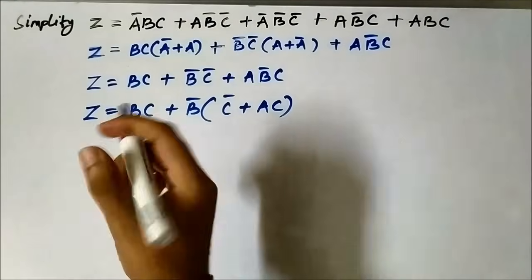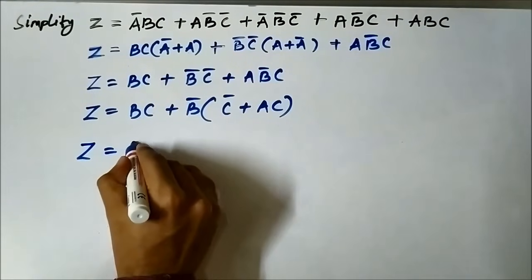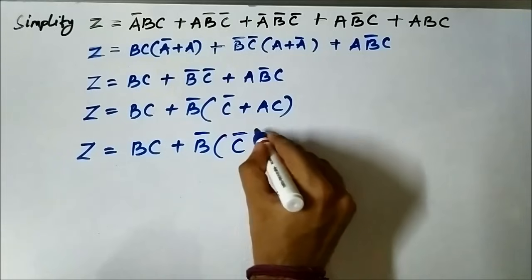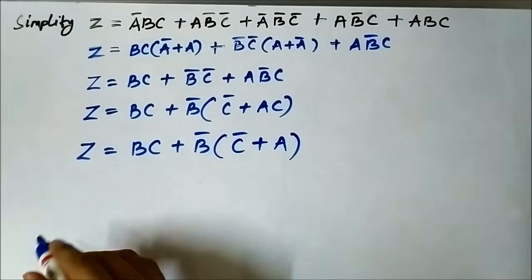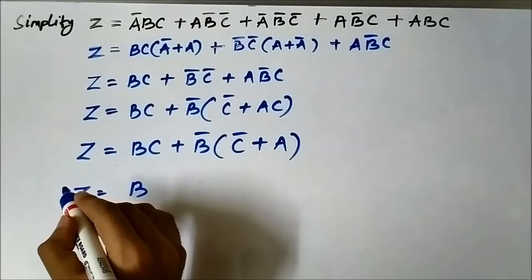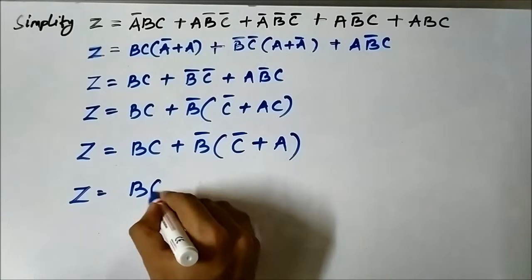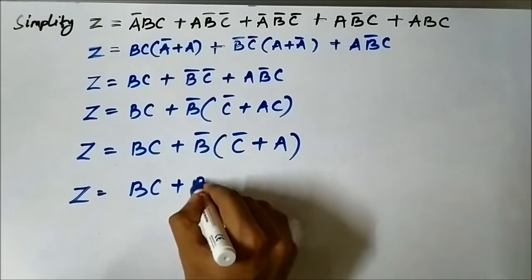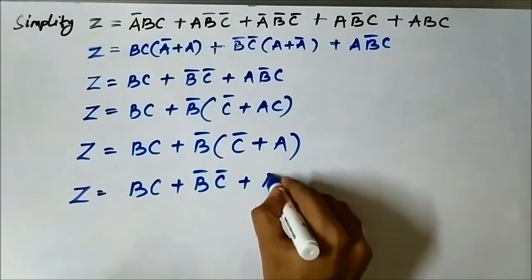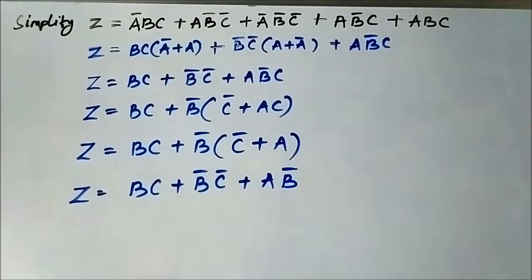I have already posted a video related to Boolean algebra rules, so please check that out. Applying this rule here, the expression becomes z = b·c + b̄·(c̄ + a). Let us verify there are no more common terms — b·c + b̄·c̄ + b̄·a. No further simplification is possible, so this is the final expression.